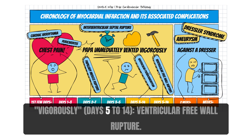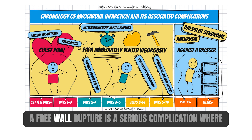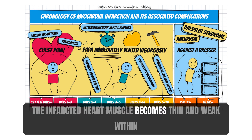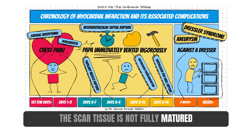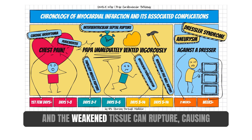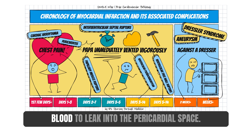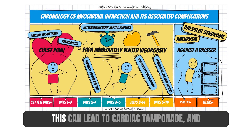Vigorously — days 5 to 14 — ventricular free wall rupture. A free wall rupture is a serious complication where the infarcted heart muscle becomes thin and weak. Within the first 2 weeks after a myocardial infarction, the scar tissue is not fully matured and the weakened tissue can rupture, causing blood to leak into the pericardial space. This can lead to cardiac tamponade and shock.